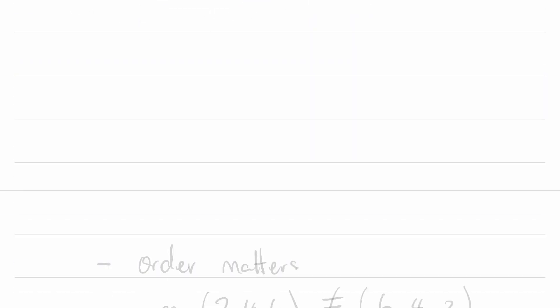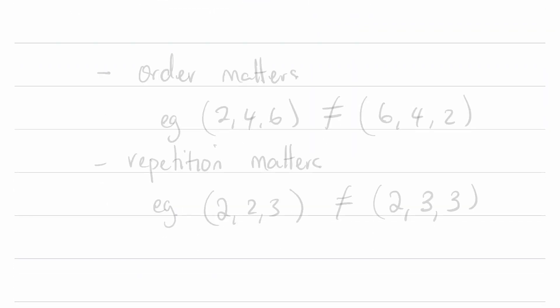Two things we want to highlight right off the bat is that order matters. So for example, the list (2, 4, 6) is not equal to the list (6, 4, 2), even though they have the same elements.